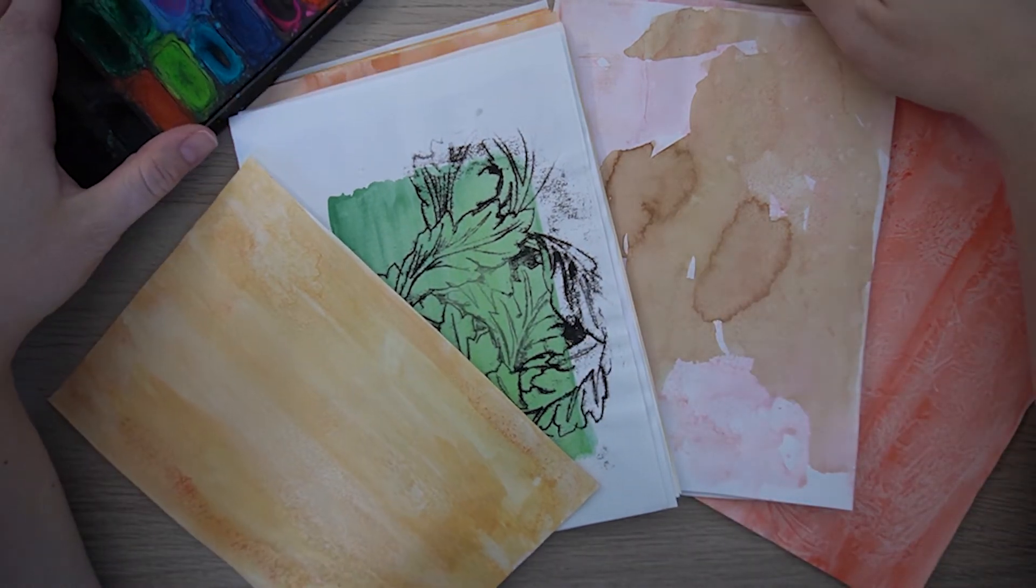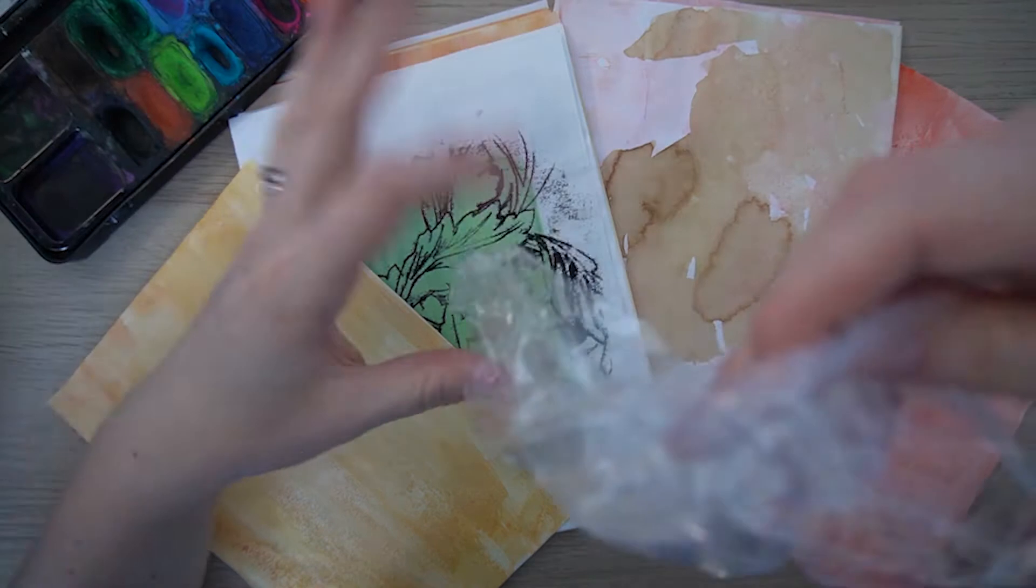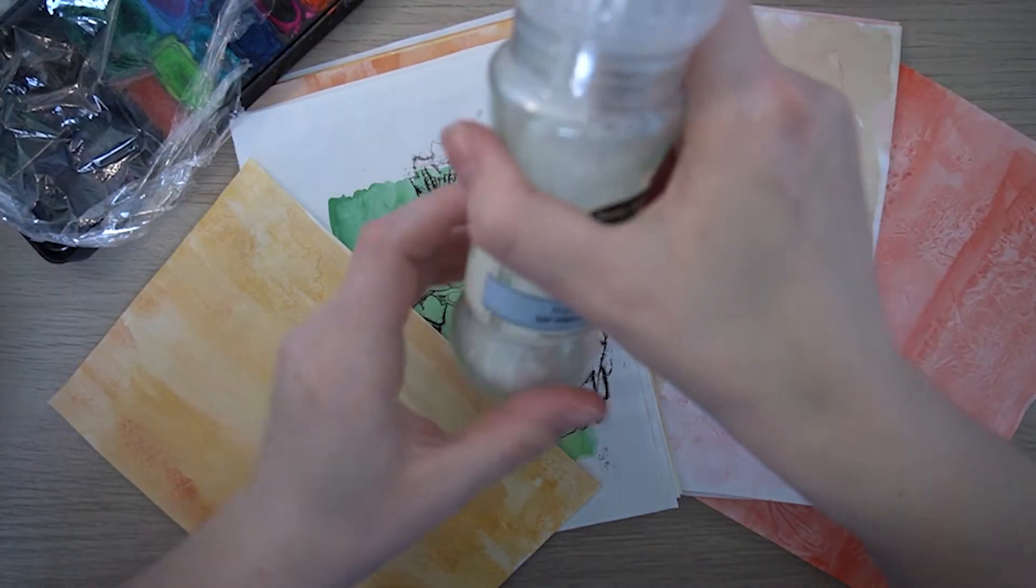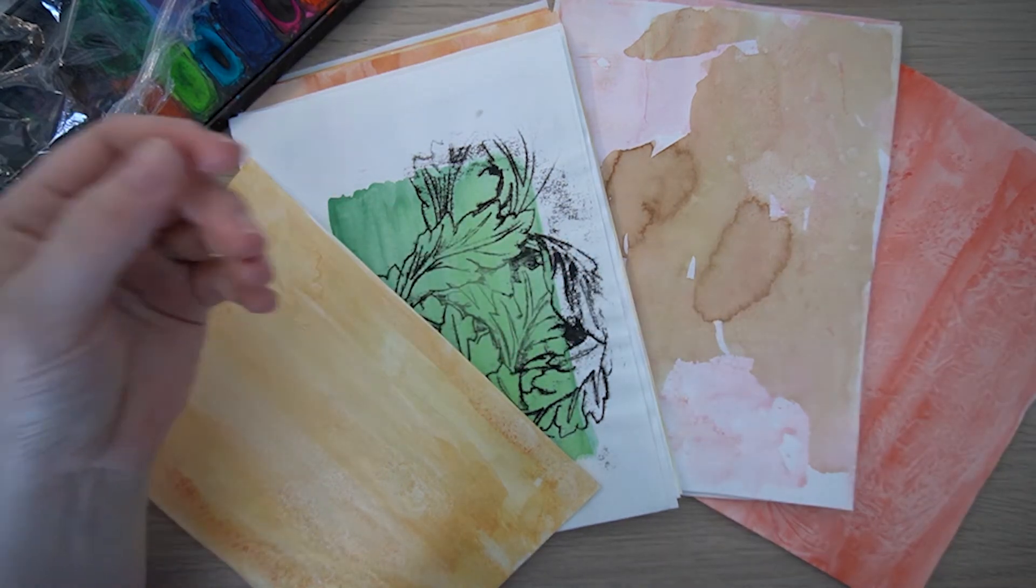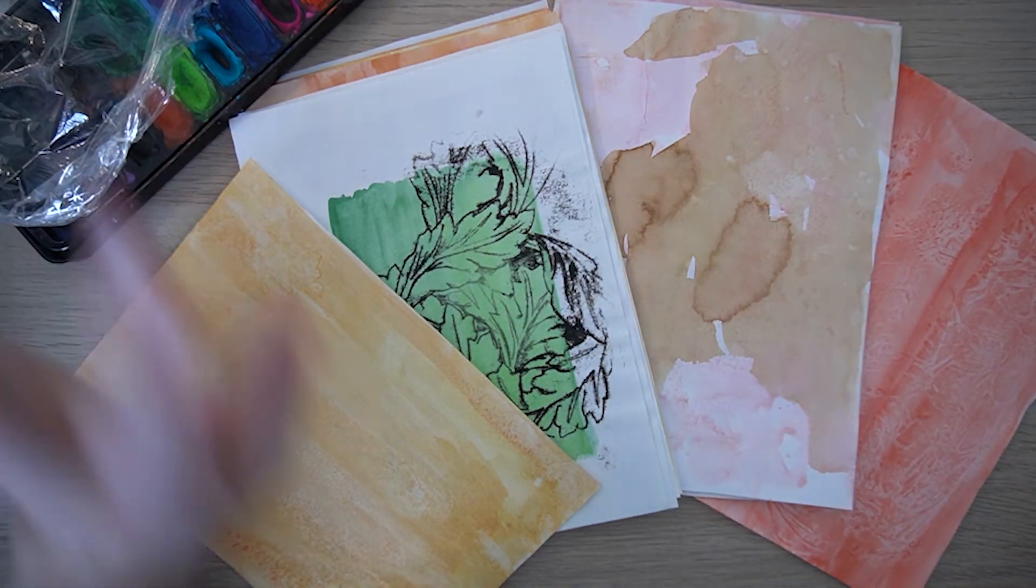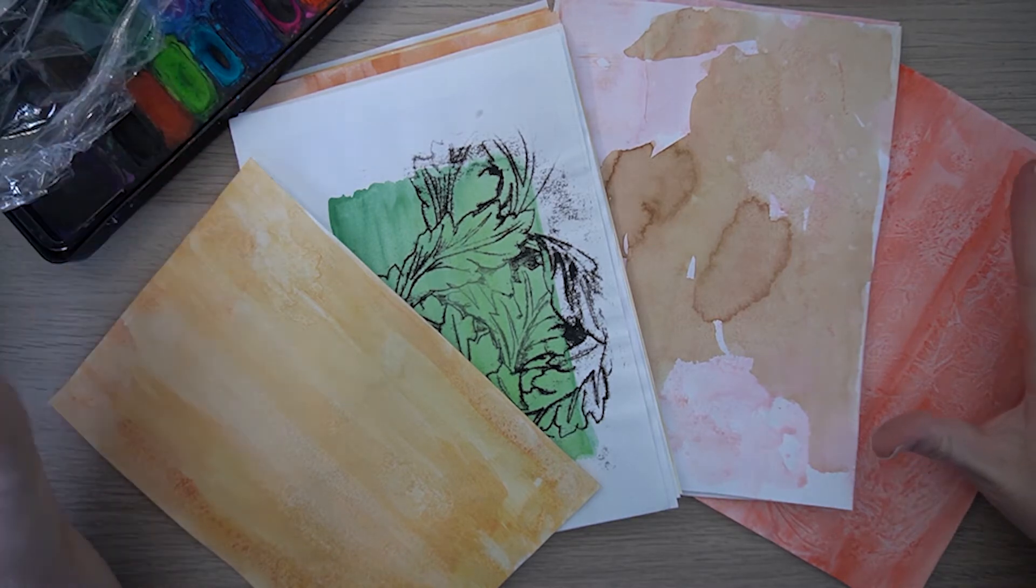So we've got a few different techniques here. I've got my watercolors, I've got a piece of cling film, I've got some salt, and I've got a large square brush. So I'm going to complete five little samples for you and show you some examples.